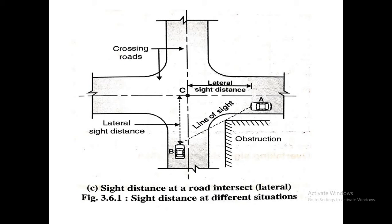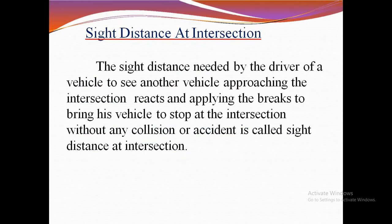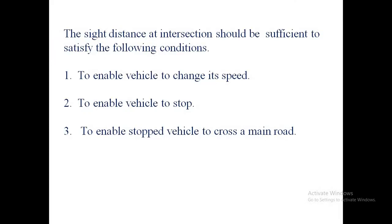There is a line of sight, so we need to observe all remaining sides to check if any vehicle is coming. The design of sight distance at an intersection may be based on three possible conditions sufficient for safety. The first is to enable a vehicle to change its speed; the second is to enable a vehicle to stop; and the third is to enable a stopped vehicle to cross the main road.